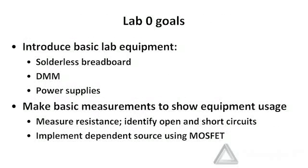That concludes our basic outline of the overall lab assignments. We are now going to start talking specifically about Lab Zero. Our goals for Lab Zero are, first, to introduce the basic lab equipment. We will be using a solderless breadboard in this experiment. We will look at DMM usage. We will also look at using power supplies. We will make some basic measurements to show how to use this equipment. For example, we will measure resistance. We will identify open and short circuits. And then finally, we will implement a dependent source using a MOSFET.